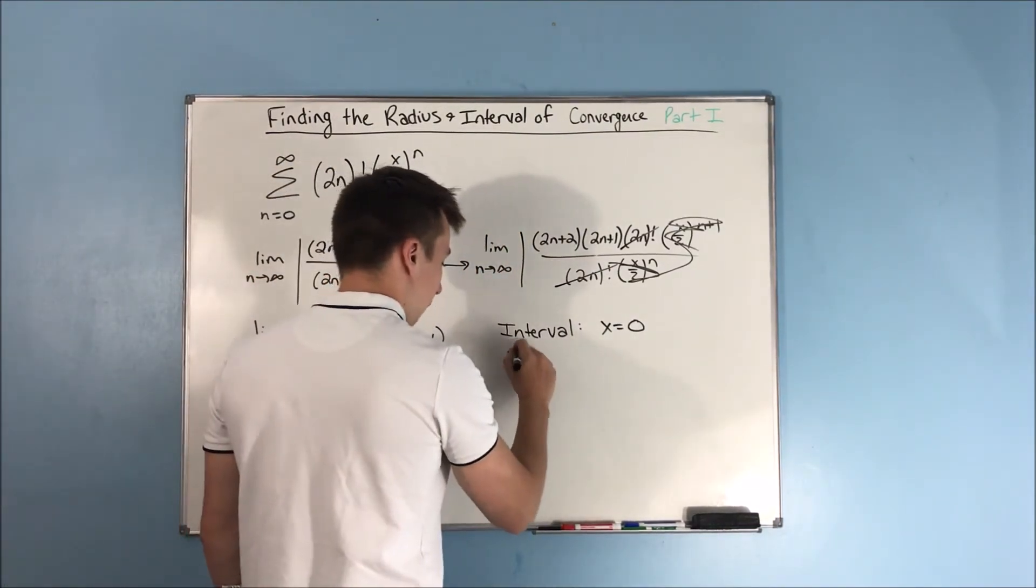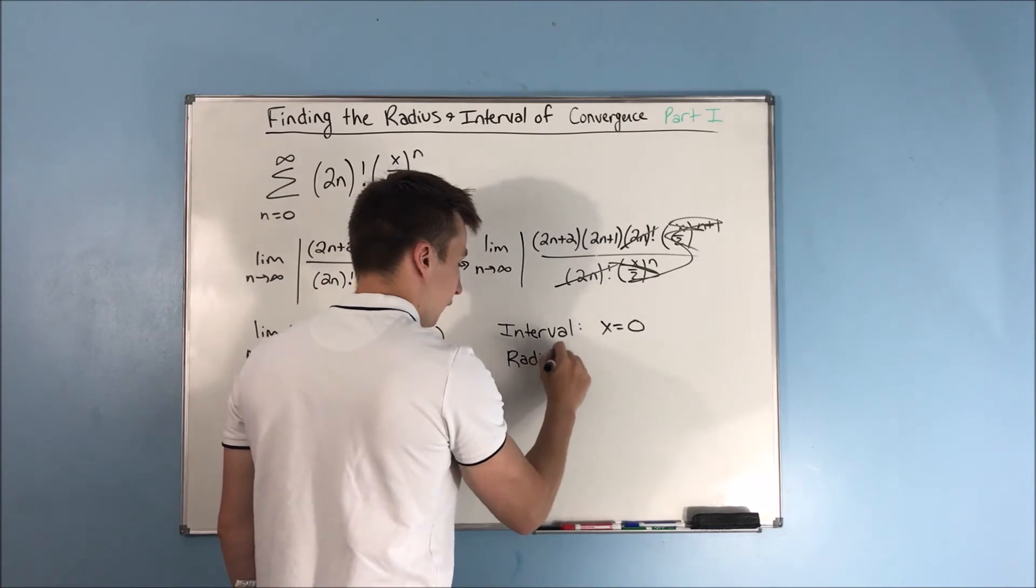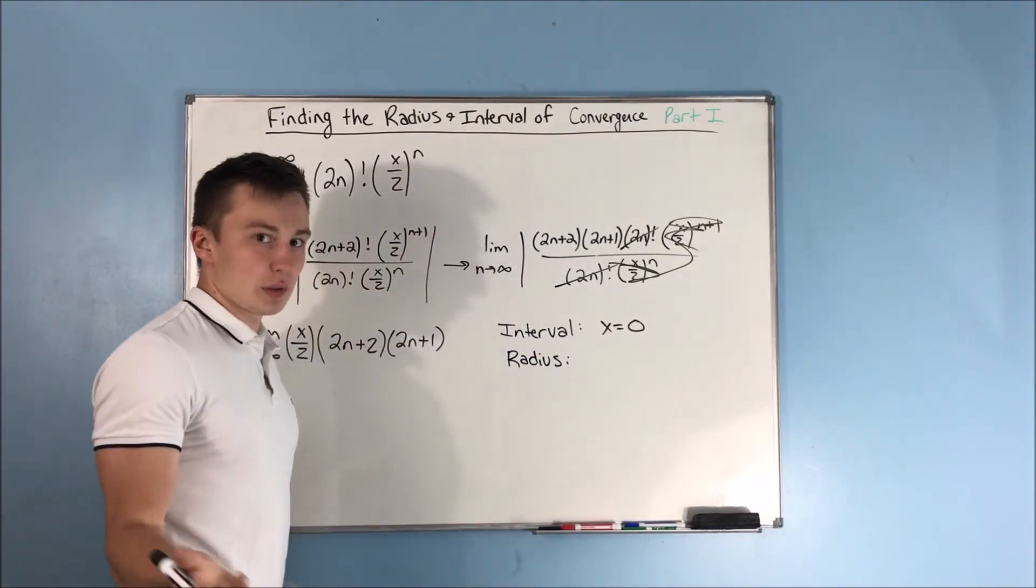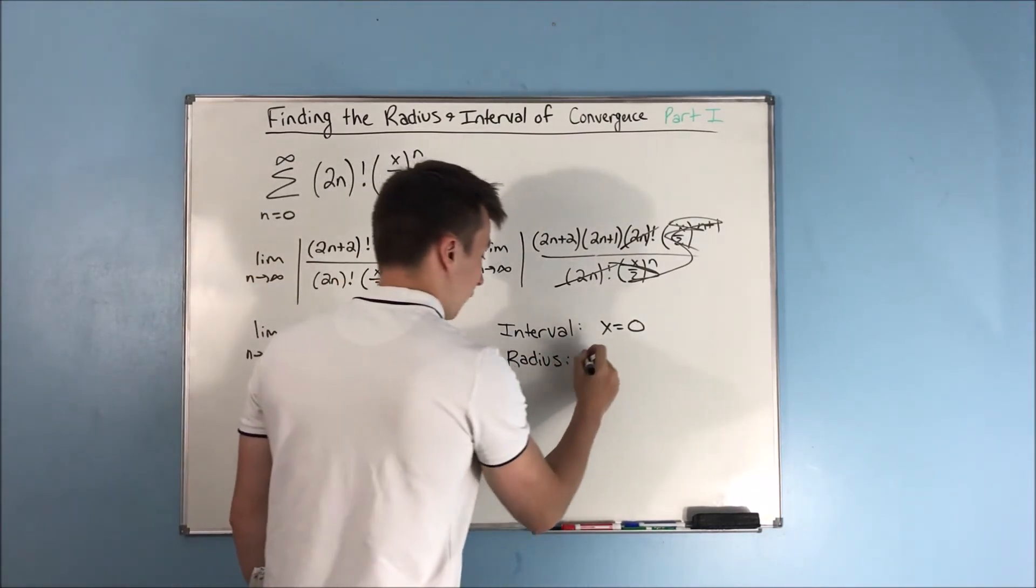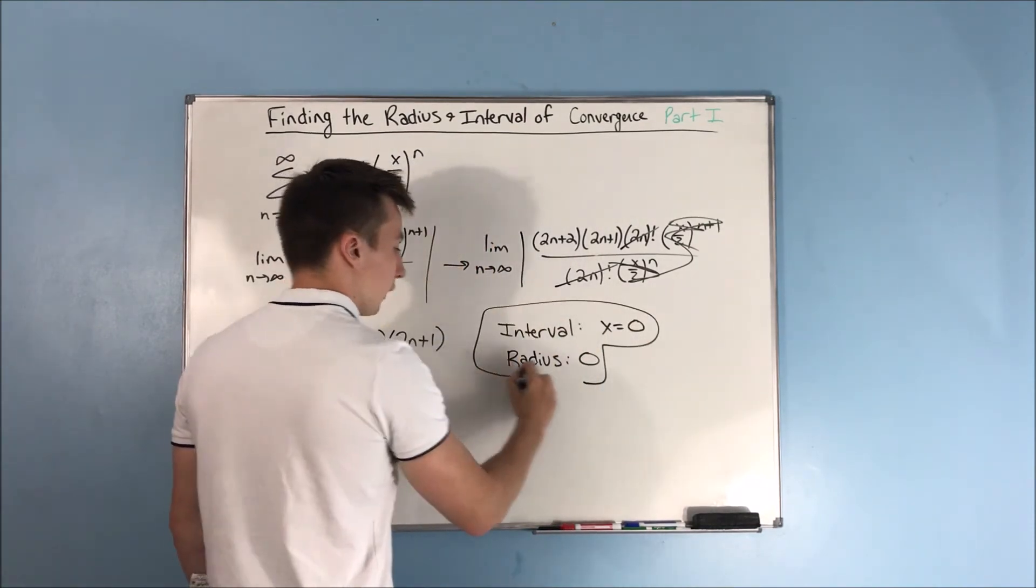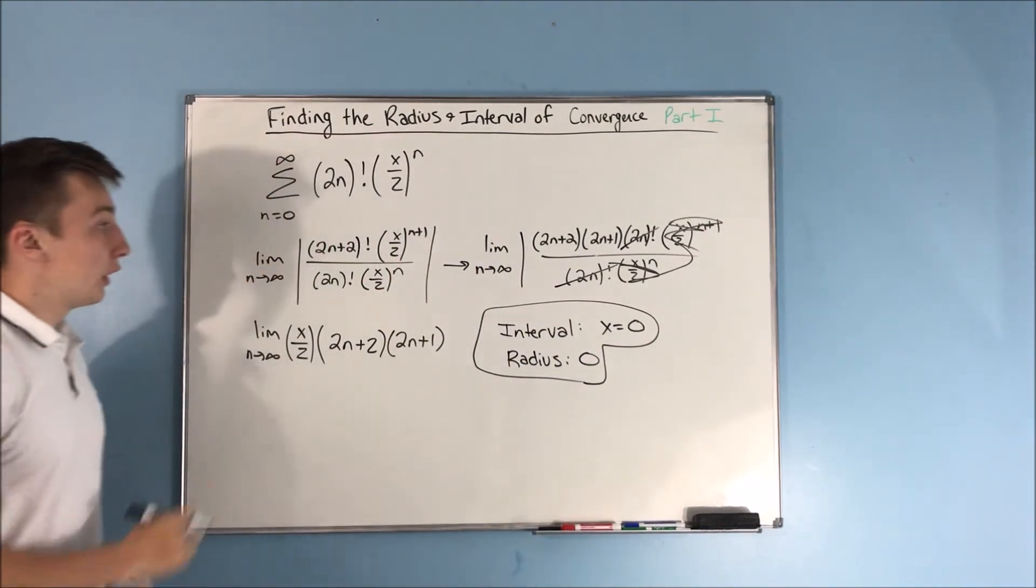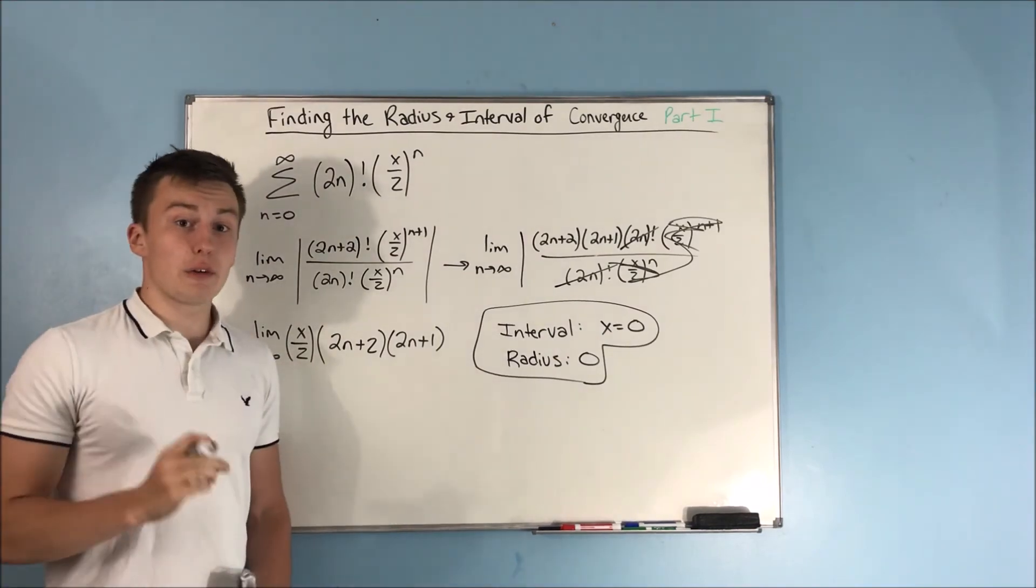So that means that your interval of convergence is just x equals 0. And that means that your radius of convergence is of course also 0. That is the answer to our last problem here. That's going to do it for this video.